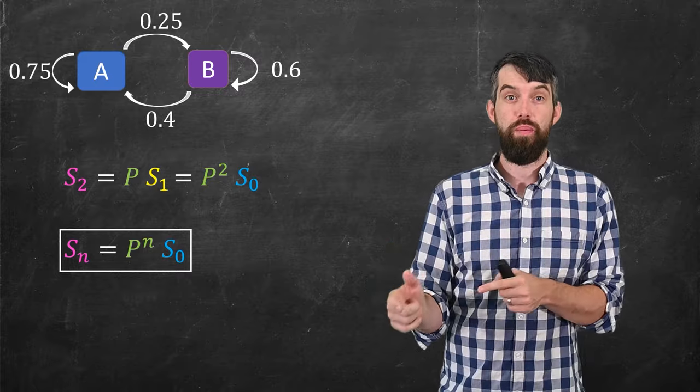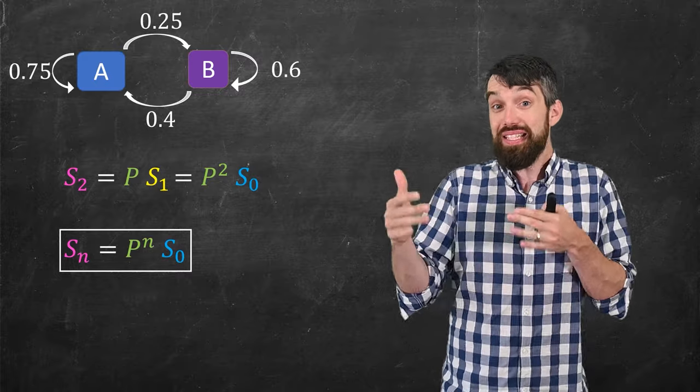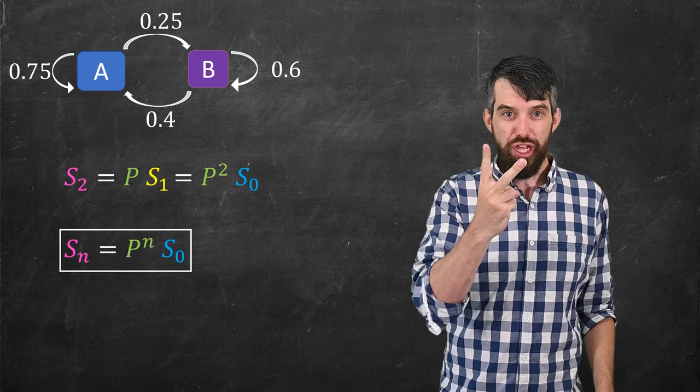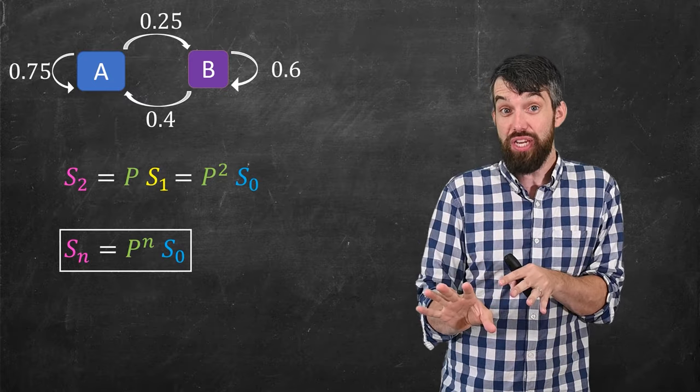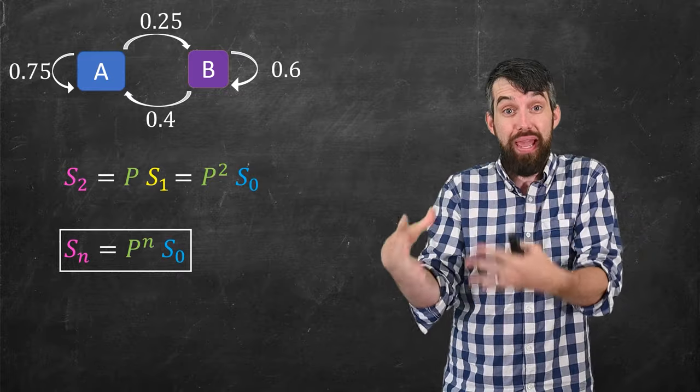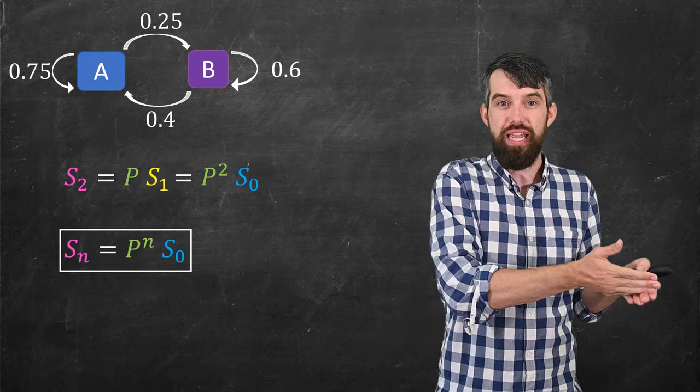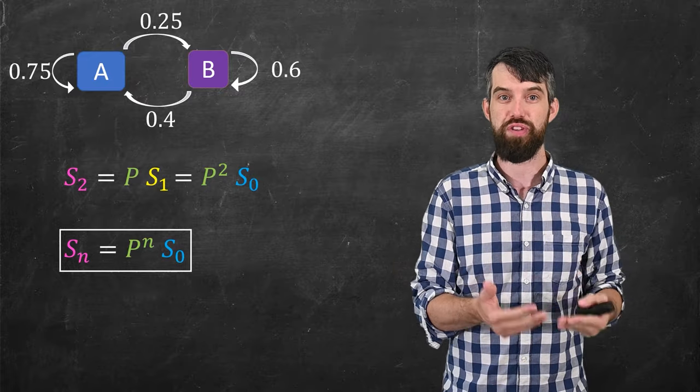So if you're given a problem about a Markov process, the main steps are going to be to one, write down that transition diagram so you can get all the numbers, two, take that transition diagram and put it into a matrix form, and then three, you can figure out any future state just by multiplication of that matrix a sufficient number of times.